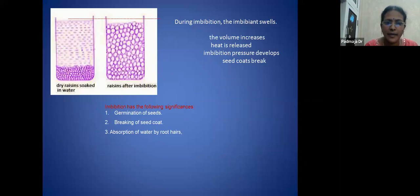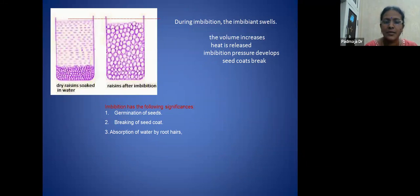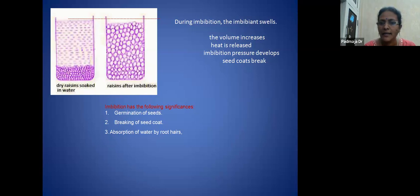Proteins have high imbibing capacity, starch has less, and cellulose has the least. During imbibition, water is absorbed on the surface of the imbibant — the seed coat absorbs the water. As imbibition occurs, the imbibants increase in size. As a result, volume increases, heat is released, and imbibition pressure develops. Seed coats may rupture due to imbibition pressure — for example, in turmeric seeds, the seed coat ruptures as water is absorbed.